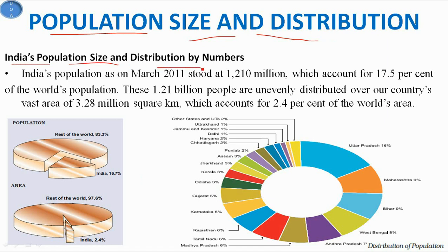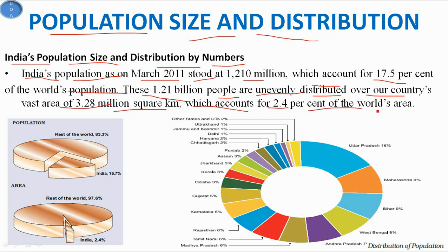India's population size and distribution — first we look at the numbers. India's population as of March 2011 stood at 1,210 million. India accounts for only 2.4% of the world's area, yet we share about 17.5% of the world's population. These 1.2 billion people are unevenly distributed over a vast area of 3.28 million square kilometers.